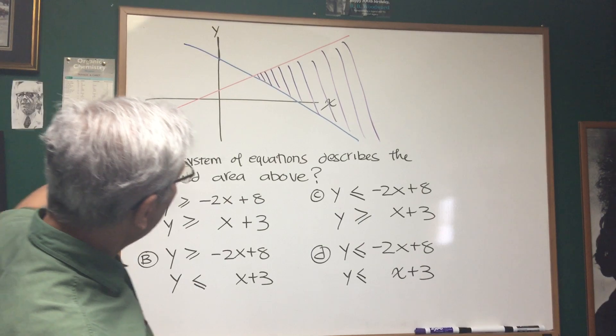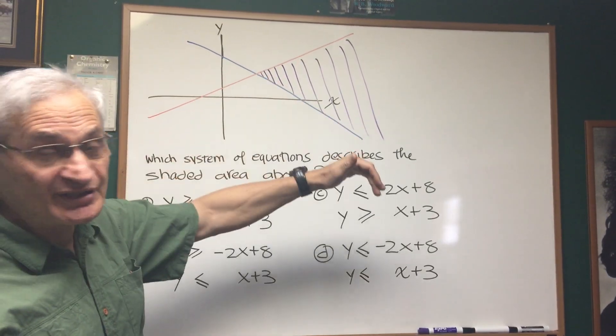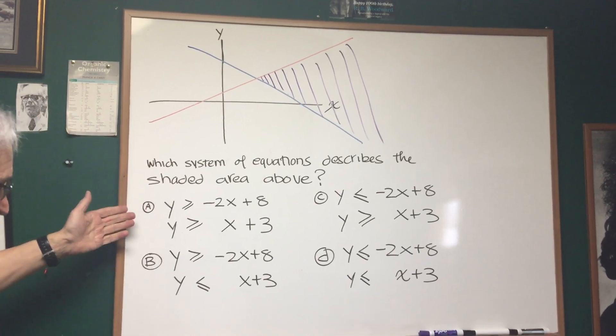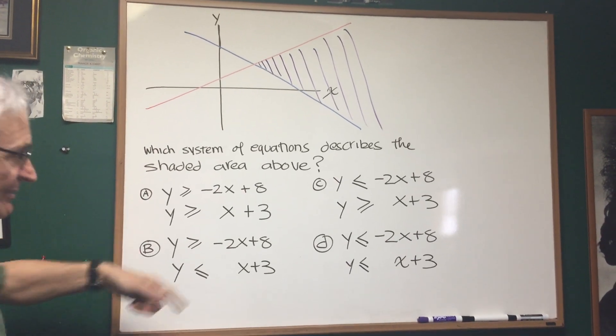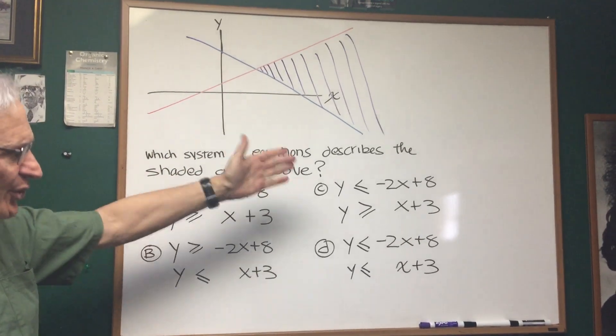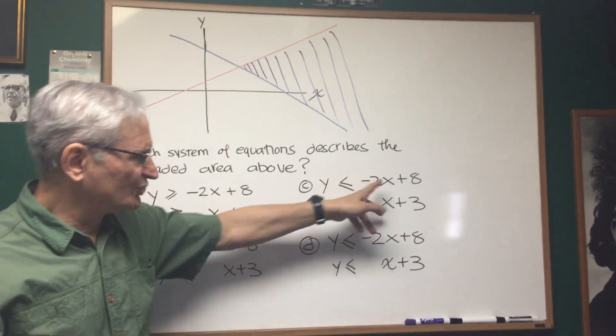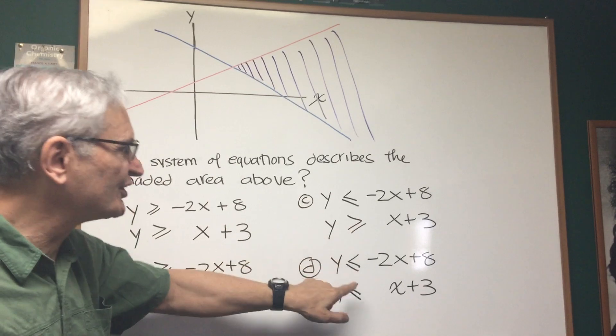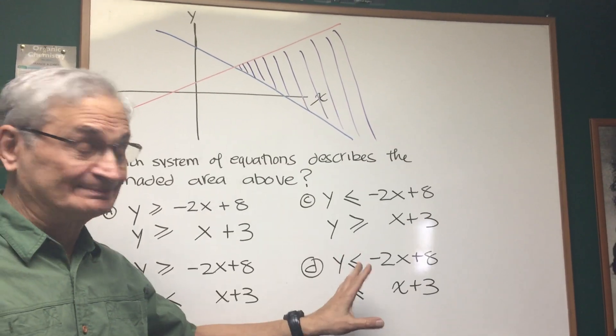Well, let's look at the graph. What do we have? The graph of two straight lines and the shaded area between them. All right, and we have a choice of possible answers A, B, C, and D. Notice that the two equations involved are always the same. What's different is the direction of the inequalities on each one of them.